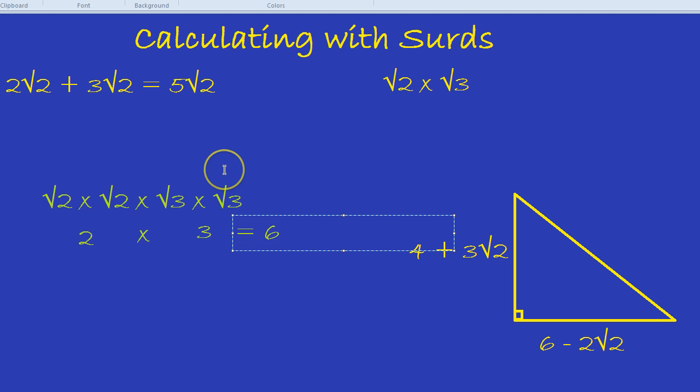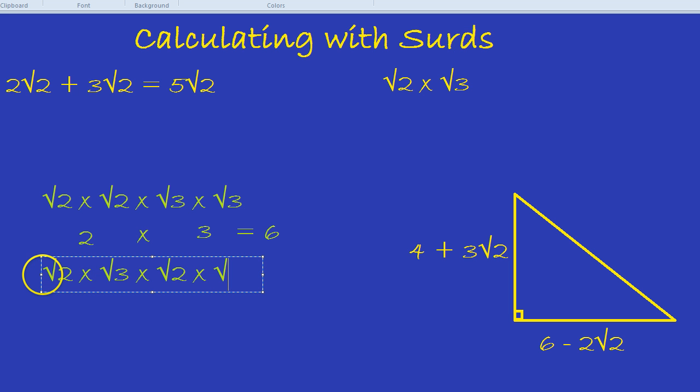But that leads to something quite interesting, even though it may not look like it. Let's rearrange this sum. It's the exact same sum, but now I'm going to write it like this: root 2 times root 3 times root 2 times root 3. I've barely changed it. I've just changed around the order a little bit. Let's put it in brackets. Now, we know the answer to this is going to be 6 because it's the exact same calculation that we were doing before.